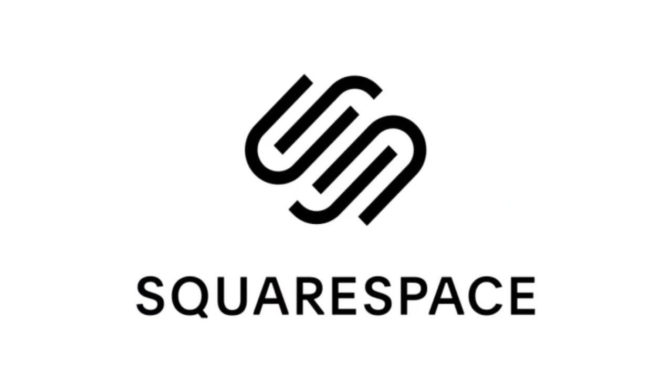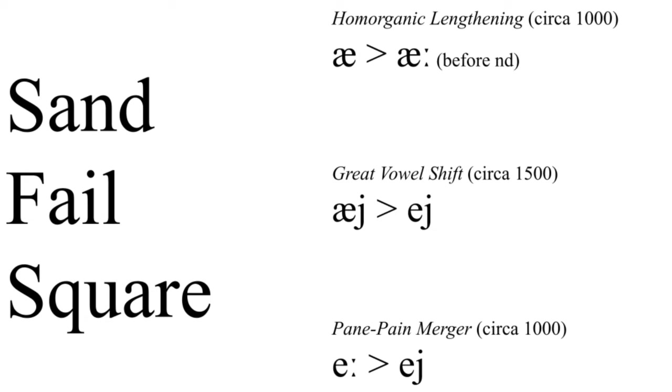Sand, fail, square. What do these three things have in common? They basically rhyme if you pronounce them the same way I do. You would expect the way that they're written out to reflect this fact, and it does — they're all written with the long A sound. But just to see how similar they actually are, we can turn to the IPA, the massive system of letters and diacritics that allows us to represent every sound that occurs in every language.